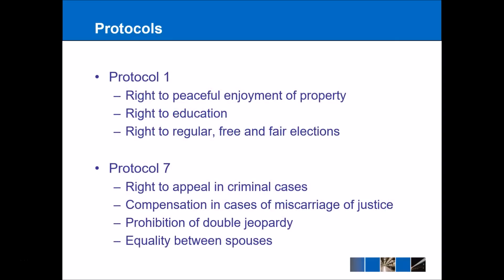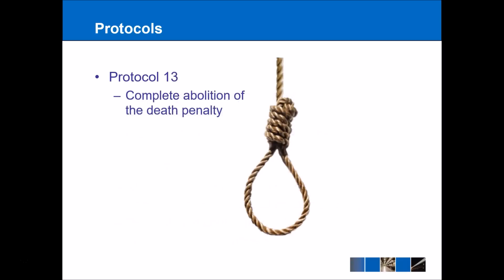Finally, there are a number of protocols to look at as well. Protocol 1 covers the right to free and fair elections (including the right to vote), peaceful enjoyment of property, and right to education. The right to education goes up to secondary level but doesn't include university or higher education. Protocol 7 covers the right to appeal in criminal cases, equality between spouses, and family proceedings. Protocol 13 covers the complete abolition of the death penalty. The convention is really interesting — a lot of the issues are very political in nature.